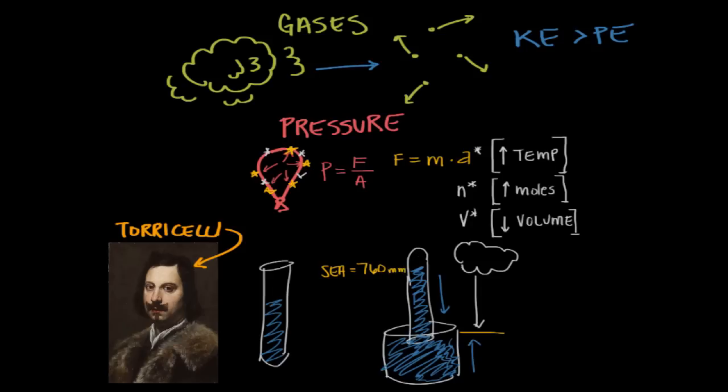Now if we were to measure the height of the column on top of a giant mountain, the column would be shorter, because there isn't as much air pushing down on the open liquid. So more mercury from the column could escape.